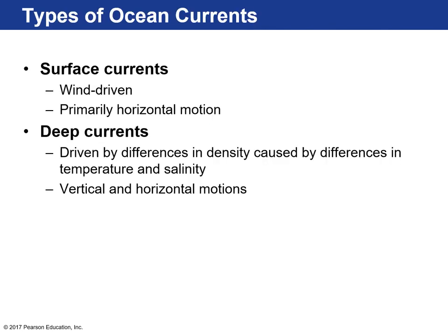There are two types of ocean currents: surface currents and deep ocean currents. Surface currents are on the surface, driven by the global wind belts — really affected by the prevailing winds we talked about in Chapter 6, air-sea interaction. It's mostly a horizontal motion, with wind transferring its energy on the surface of the ocean and pushing it at different latitudes.